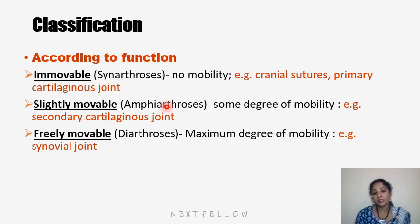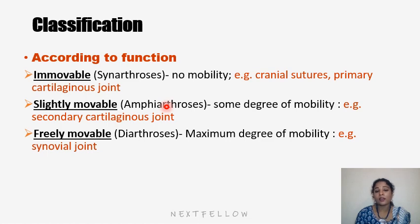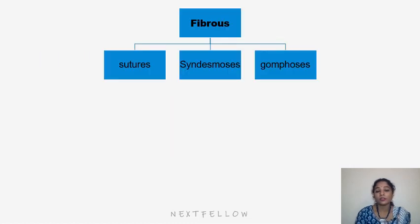Secondary cartilaginous joints are slightly movable joints. Freely movable joints are called diarthrosis, where the maximum degree of mobility is seen. Synovial joints are examples of freely movable diarthrosis joints.